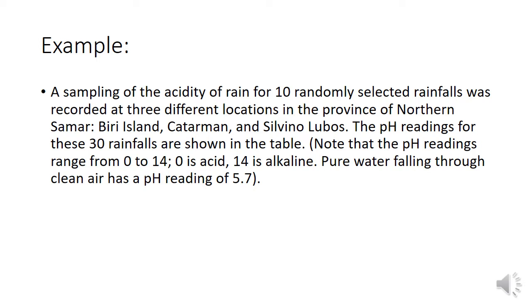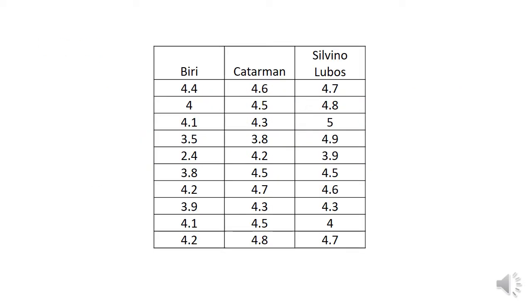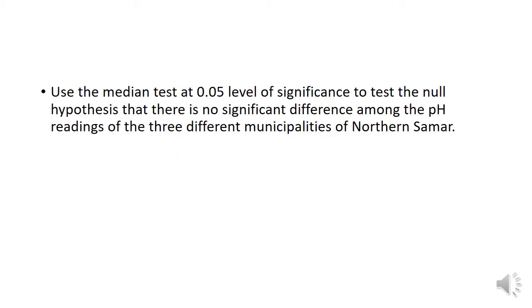Note that pH readings range from 0 to 14 — 0 is acidic and 14 is alkaline. Pure water falling through clean air has a pH reading of 5.7. This is our data. We will use the median test at a 0.05 level of significance to test the null hypothesis that there is no significant difference among the pH readings of three different municipalities of Northern Samar.